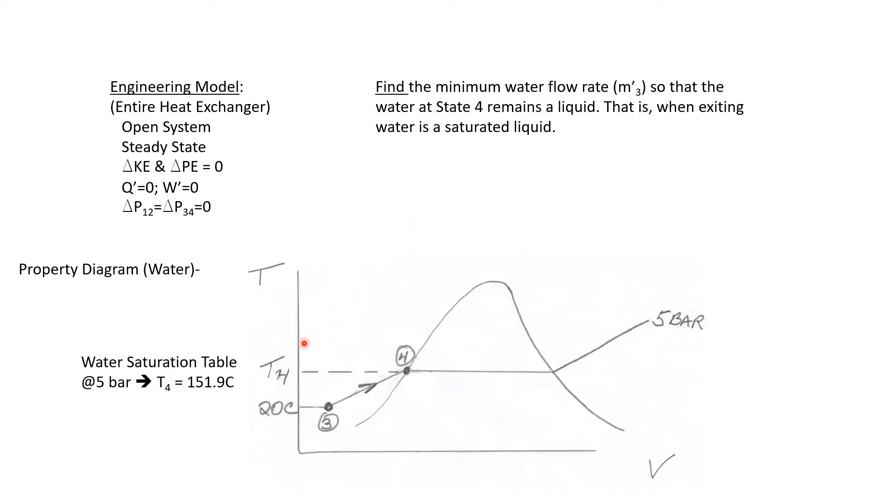Let's draw this on a T-v diagram. Let's show the two water states. We know that the water is coming in at state three is at 5 bar and 20°C. So I've shown that. So this is the inlet state of the water. Now the saturation temperature at 5 bar can be found in the water saturation table, and I found it as 151.9°C. So that's the saturation temperature of water at 5 bar. 20°C is well below that, thus it's subcooled.